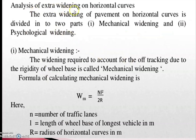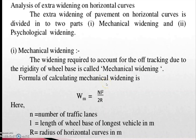The analysis of extra widening on horizontal curves is classified into two types: mechanical widening and psychological widening. In mechanical widening, the widening required to account for the off-tracking due to the rigidity of the wheel base is called mechanical widening. It is completely related to the performance of the vehicle at the turning point at a particular speed.